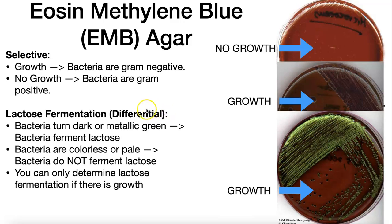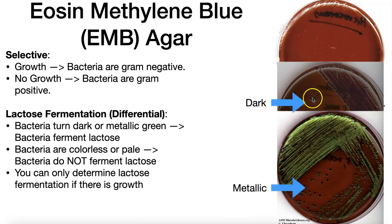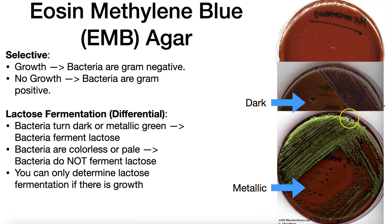With an EMB plate, lactose fermenters are going to cause a color change as well. There are two ranges of colors you can see: a dark blue-purple, which is a positive result meaning the bacteria can ferment lactose, and a metallic sheen, which is also a positive result. Either of those two results would be positive, and the conclusion would be that the bacteria can ferment lactose. If the bacteria grows but you don't have either of these two colors — so the bacteria are pale or colorless — then the bacteria do not ferment lactose.